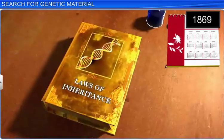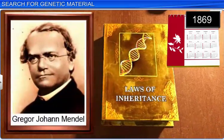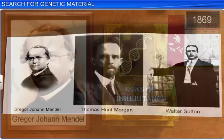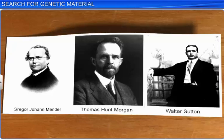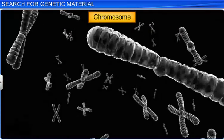Also around the same time, Gregor Mendel proposed the principles of inheritance. In fact, Gregor Mendel, Thomas Hunt Morgan, Walter Sutton, and numerous other scientists had narrowed their search for genetic material to chromosomes.